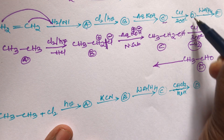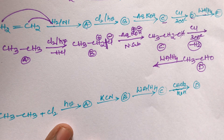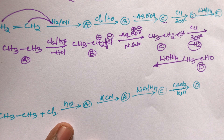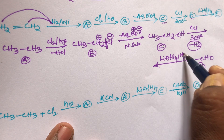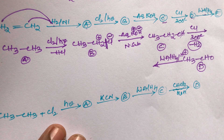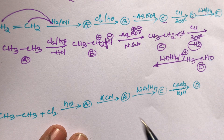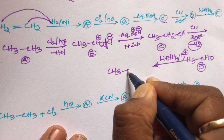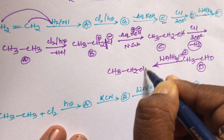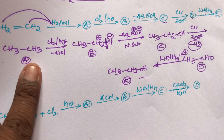When compound D (acetaldehyde) reacts with lithium aluminum hydride (LiAlH₄), which is a strong reducing agent, the aldehyde group is converted into an alcohol. In the presence of acidic hydrogen, the aldehyde is reduced and we get CH₃CH₂OH as compound E. The conversion of D to E is a reduction reaction.